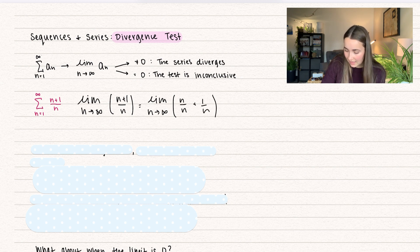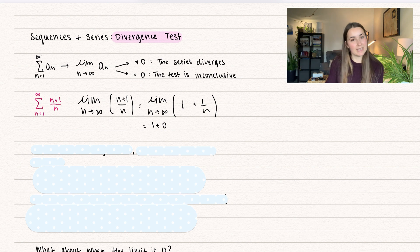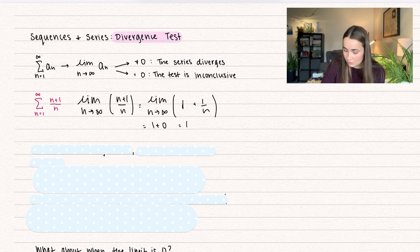Of course, n divided by n is just equal to 1. So when we evaluate this limit, we get 1 plus 0, since 1 over n goes to 0 as n gets very large, which equals 1.